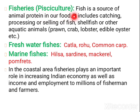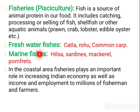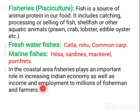Next is fisheries, that is pisciculture. Fish is a source of animal protein. Activities include catching, processing, and selling of fish. It can involve shellfish or other aquatic animals such as prawn, crab, lobster, and edible oyster. Freshwater fish include katla, rohu, and common carp. Marine fish include hilsa, sardines, and mackerel. In coastal areas, fisheries play an important role in improving the Indian economy, income, and giving employment to millions of fishermen.